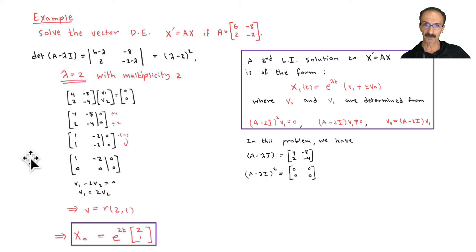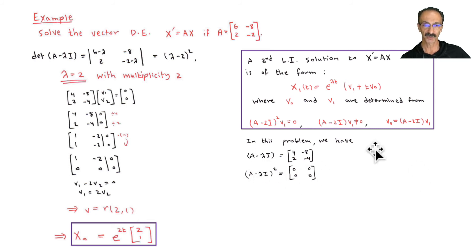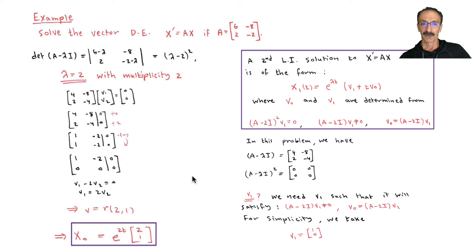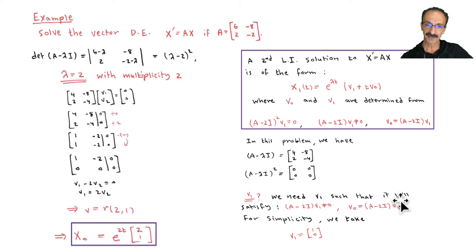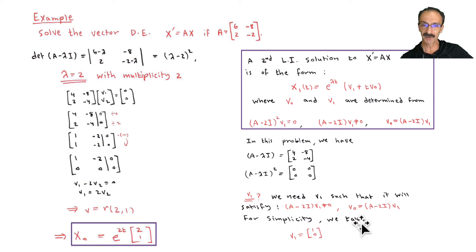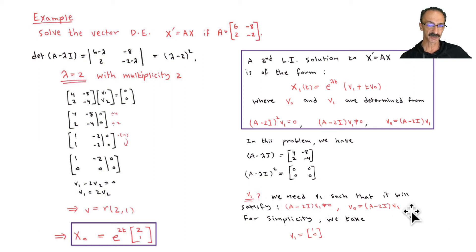Same thing as before: in this problem (A - lambda*I) and (A - lambda*I)^2 both come out to zero, which won't help directly here. So what is v_sub_1? We need v_sub_1 such that it satisfies the required conditions. For simplicity, we take v_sub_1 = [1, 0] — this might confuse some students but trust me.